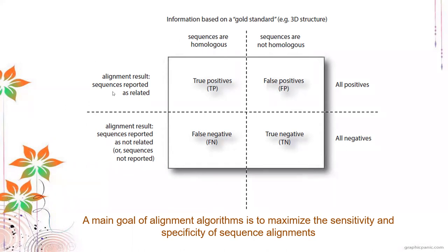False positives occur when non-homologous sequences are reported as similar, and true negatives are when non-homologous sequences are correctly reported as not similar. These mirror the true/false positive and negative concepts from biostatistics — including alpha and beta test considerations — applied to sequence alignment results.